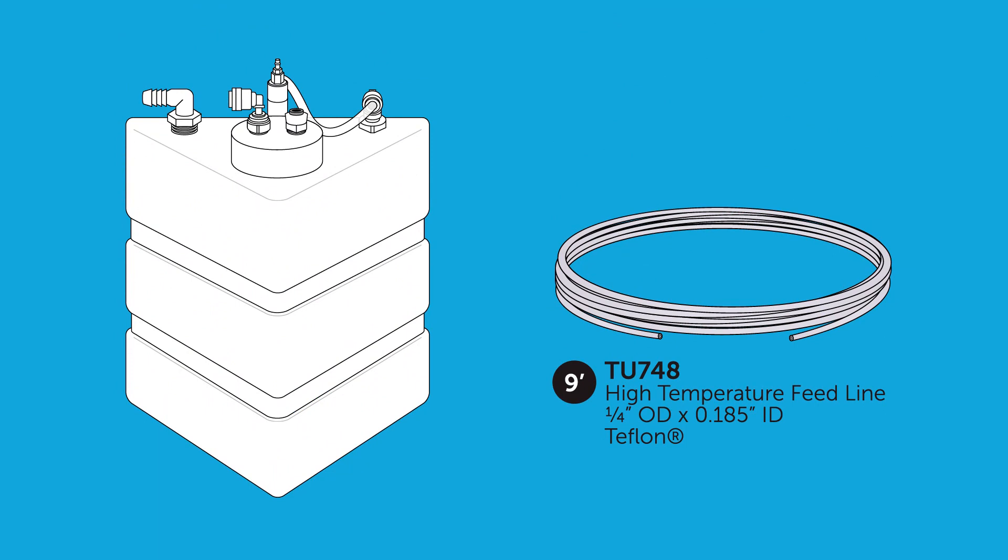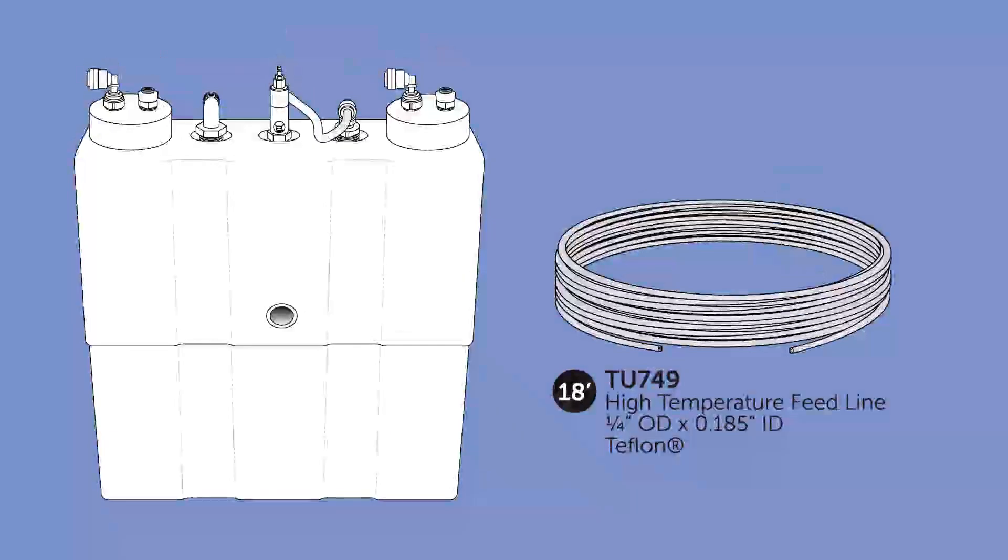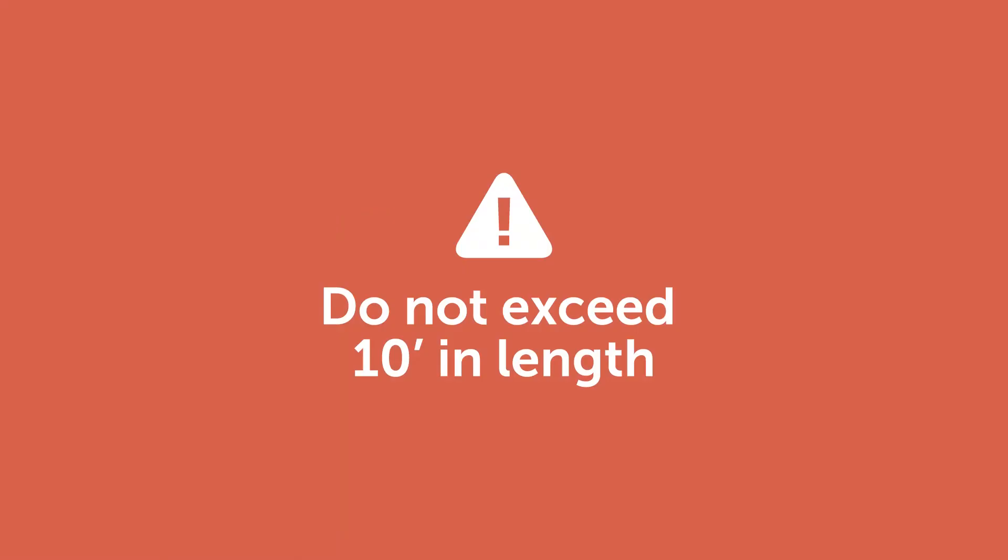A 9-foot length of the high temperature Teflon tubing is included with each model V7501 for a single autoclave, and an 18-foot length is included with each V7502 system. It's important not to exceed 10 feet in length for any individual section of tubing between a sterilizer and the VistaCool.